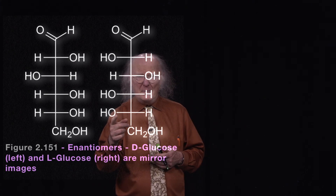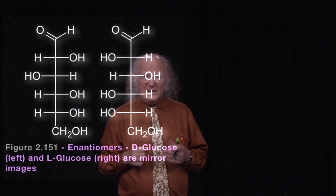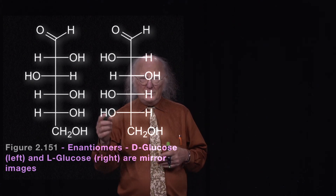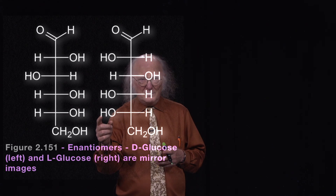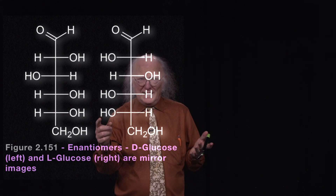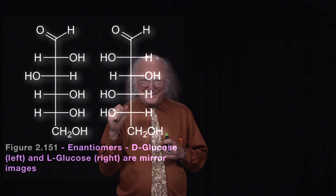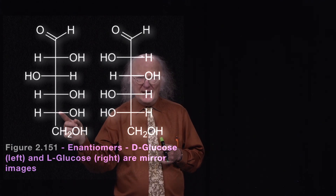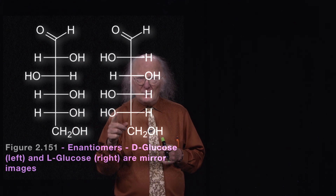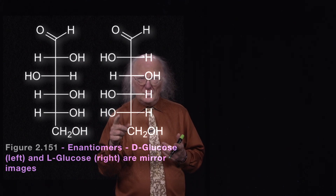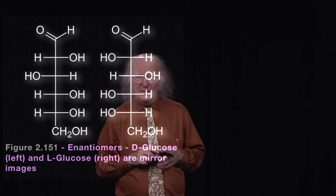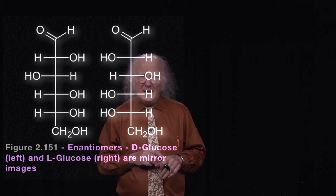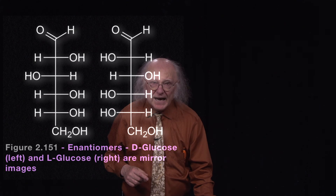L in this case meaning left. It's important to note that if we take D-glucose and simply put the hydroxyl on the left, we don't make L-glucose. We have to flip all of the individual hydroxyl groups to do that — making a mirror image, or in this case an enantiomer. The bottom carbon with the hydroxyl on the right indicates a D configuration sugar; with the hydroxyl on the left, it indicates L configuration.